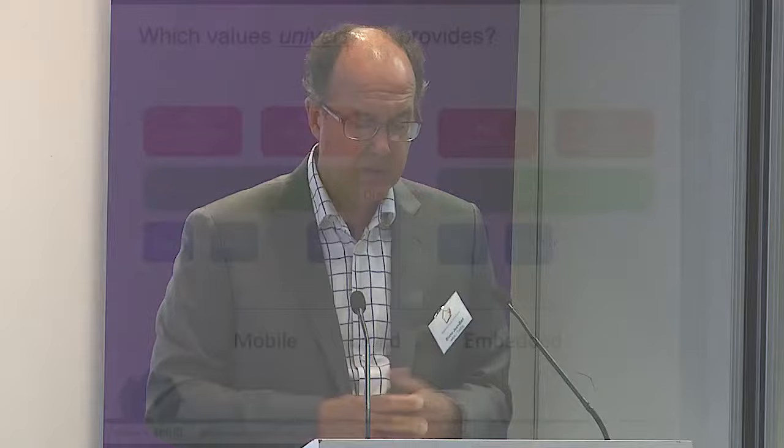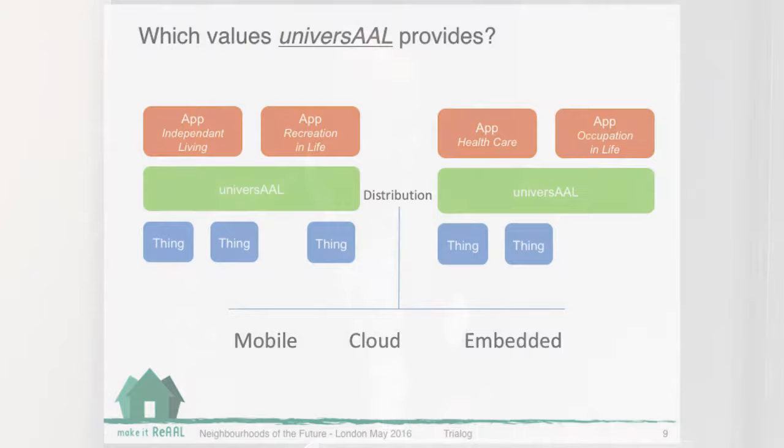Instead of having one application on independent living and one application about games operating in isolation, all these applications can take profit of each other. Universal is like a context bus where data circulates between applications. Also important is that you have mobile, cloud, and embedded versions of Universal, so you have a distribution of nodes cooperating together. Of course, Universal is not the only platform, so we need to be interoperable with other Internet of Things platforms, and we have something for that.